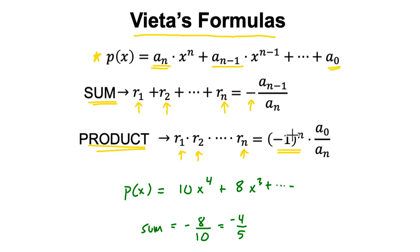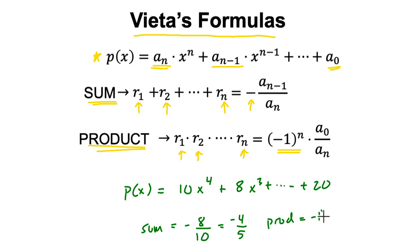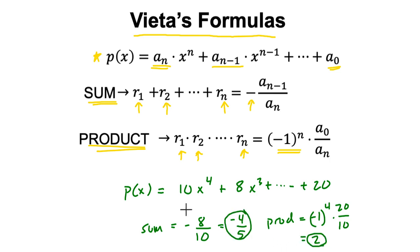Now if it's an odd degree — if n is 3, cubic or something — it's that ratio times negative one to an odd power, which means that ratio times negative one. So in our example, the product of the roots: let's pretend the last term is 20. The product equals negative one to the power of four times 20, the constant, divided by 10, which is just two. So whatever the roots of this function are, their product is two and their sum is negative four-fifths.